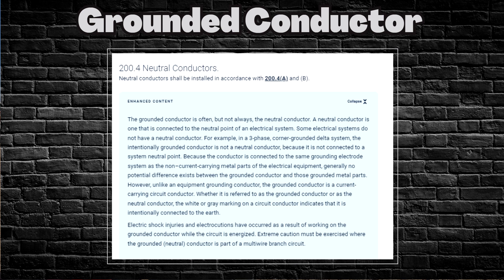Whether it is referred to as the grounded conductor or as the neutral conductor, the white or gray markings on a circuit conductor indicate that it is intentionally connected to earth. Electric shock injuries and electrocutions have occurred as a result of working on grounded conductors while the circuit is energized — extreme caution must be exercised where the grounded neutral conductor is part of a multi-branch circuit. The key point is that the grounded conductor is a current-carrying circuit conductor, and in many cases — but not all — it is the neutral.